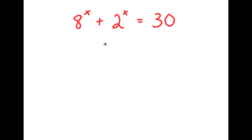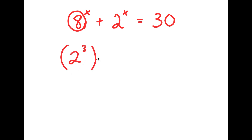In this problem, I have 8 to the power of x plus 2 to the power of x is equal to 30. I'm going to first start by rewriting 8 as 2 to the power of 3. So now I have 2 to the power of 3 to the power of x plus 2 to the power of x is equal to 30.